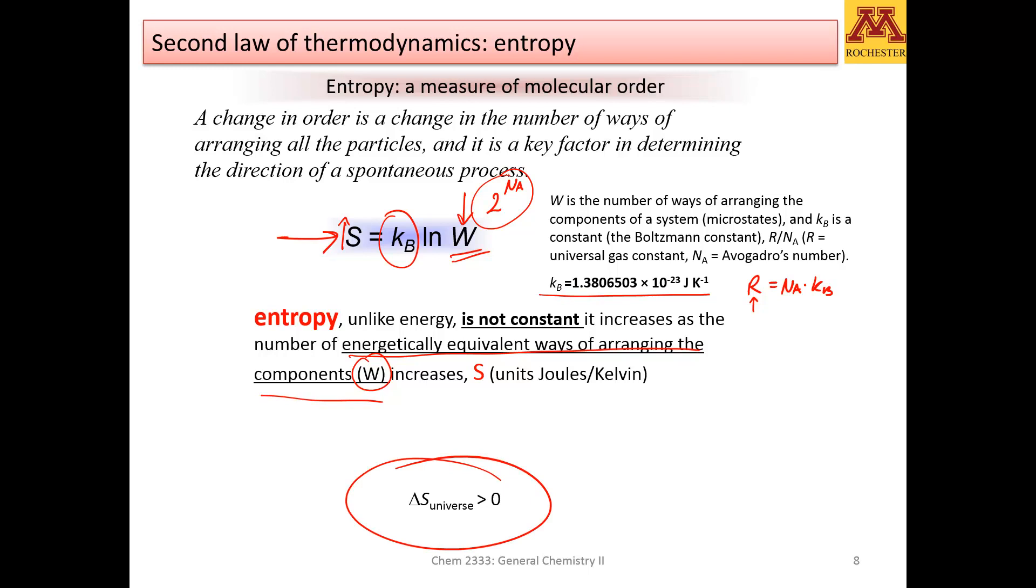We can formulate the second law of thermodynamics saying that the entropy of the universe always increases. Since the beginning of time, any change that has happened in nature has been translated into an increase of entropy, either because of the system or the surroundings, but entropy is constantly increasing.